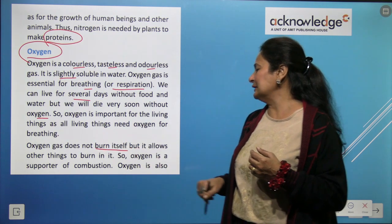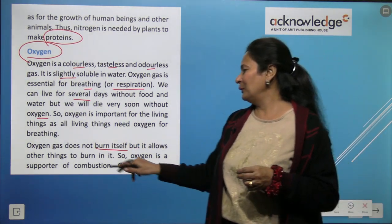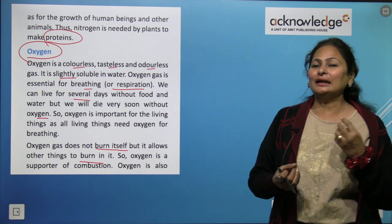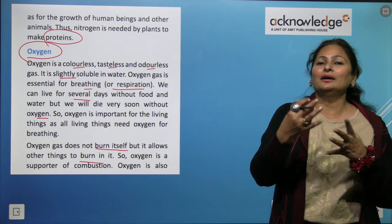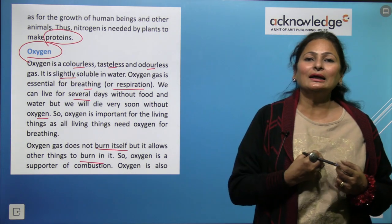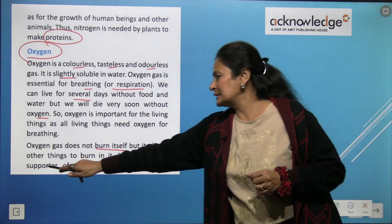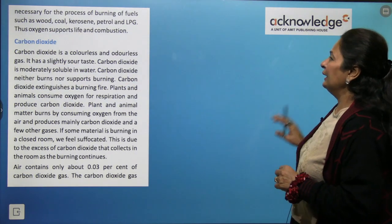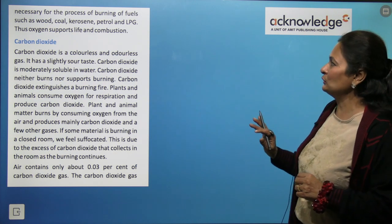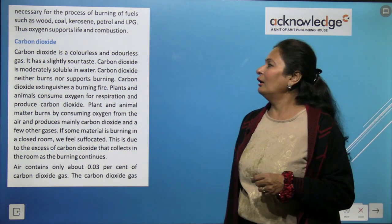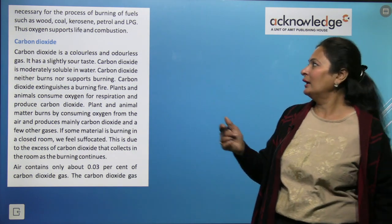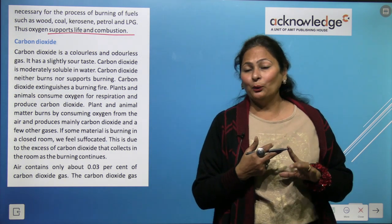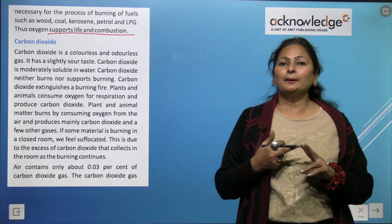Oxygen gas does not burn itself, but it allows other things to burn. Without oxygen, nothing can burn — oxygen is a supporter of combustion. Oxygen is necessary for the burning of fuels such as wood, coal, kerosene, petrol, and LPG. Oxygen supports both life and combustion.